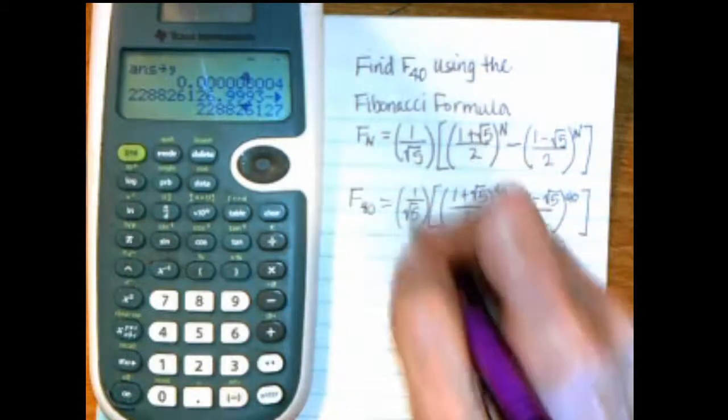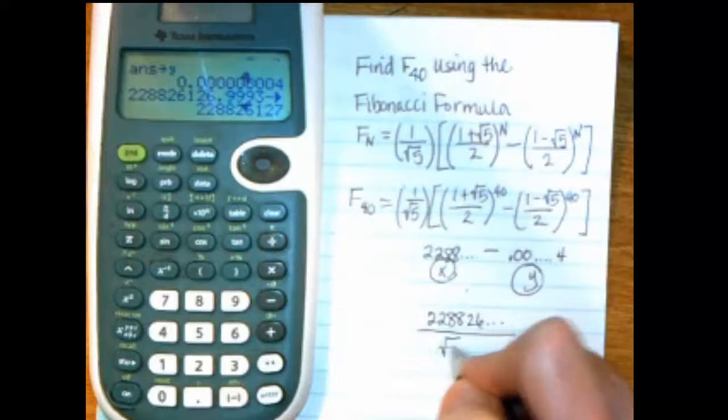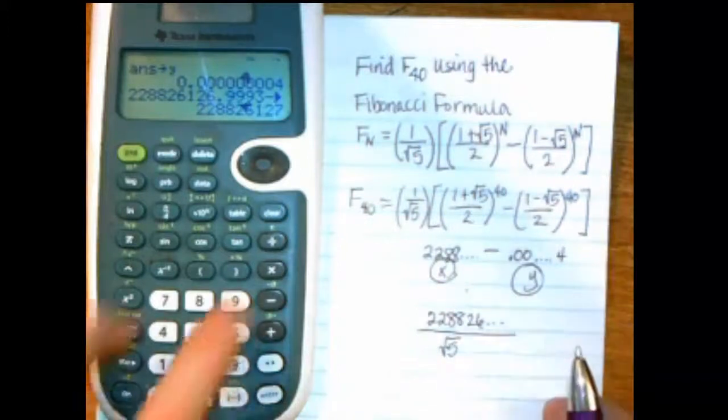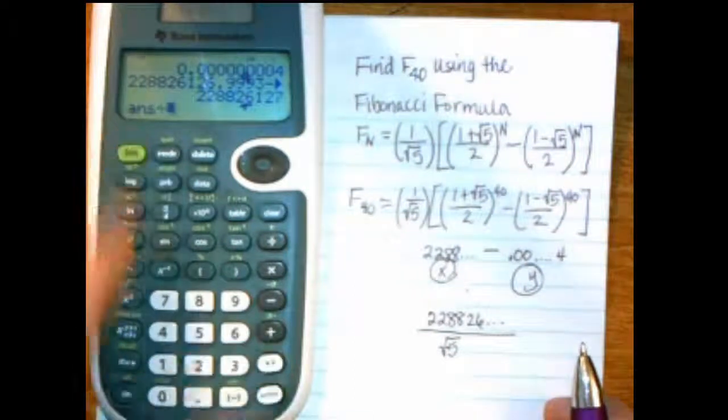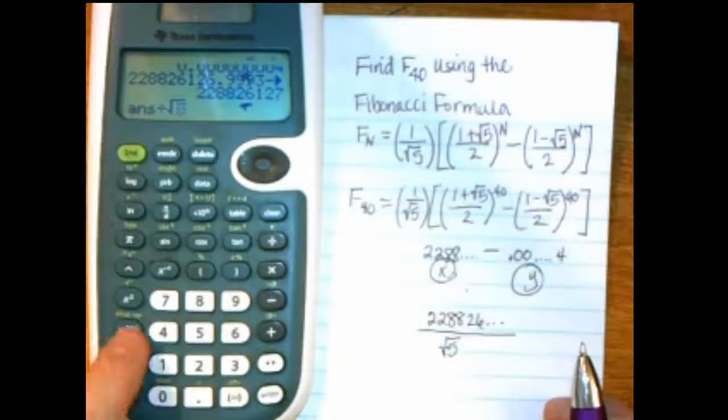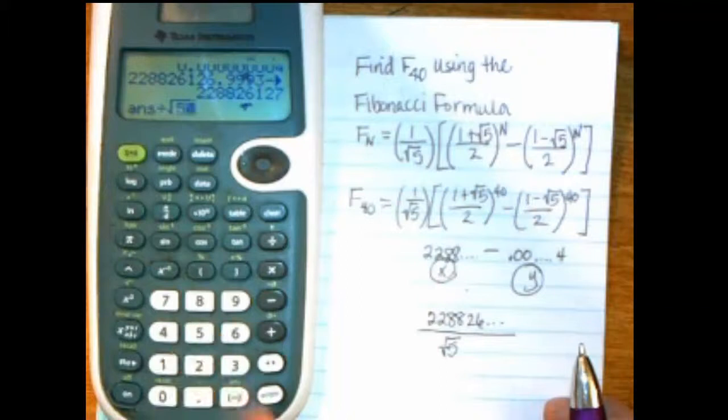And the last thing, remember, divide by square root of 5. So that number divided by, put in second, and the X squared button to get the square root of 5. Enter.